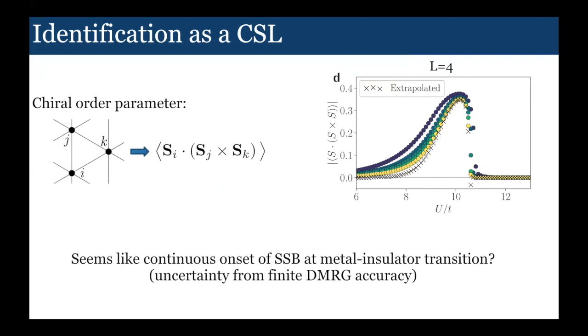First I'll show you the chiral order parameter. This is just the expectation value of S dot S cross S plotted against U over T. You can see it's zero in the metal, zero in the large 120-degree order phase, and then it turns on in the putative non-magnetic insulator. This is the evidence for spontaneous symmetry breaking of time reversal.